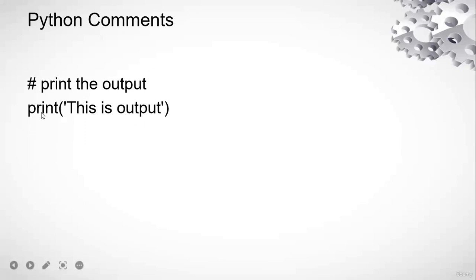Now, this is the syntax for the print statement. Next, we have comments. For writing a single-line comment in Python, we use the hash symbol. In C and C++ we used double slash, but in Python we use hash. A comment is something you don't want to execute — developers write comments for their own understanding, to note why a particular line of code was written or what it means.